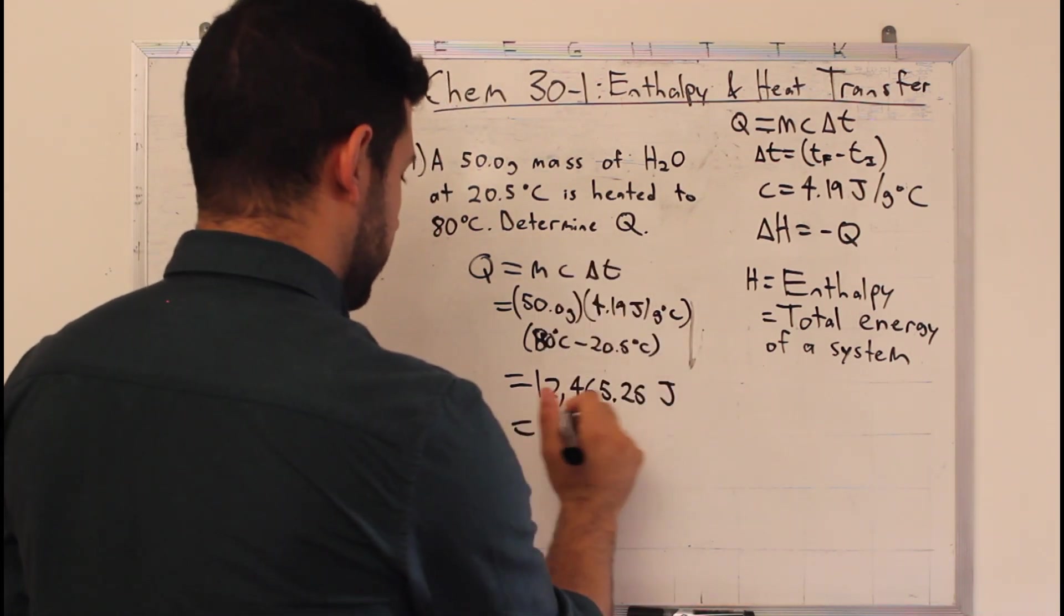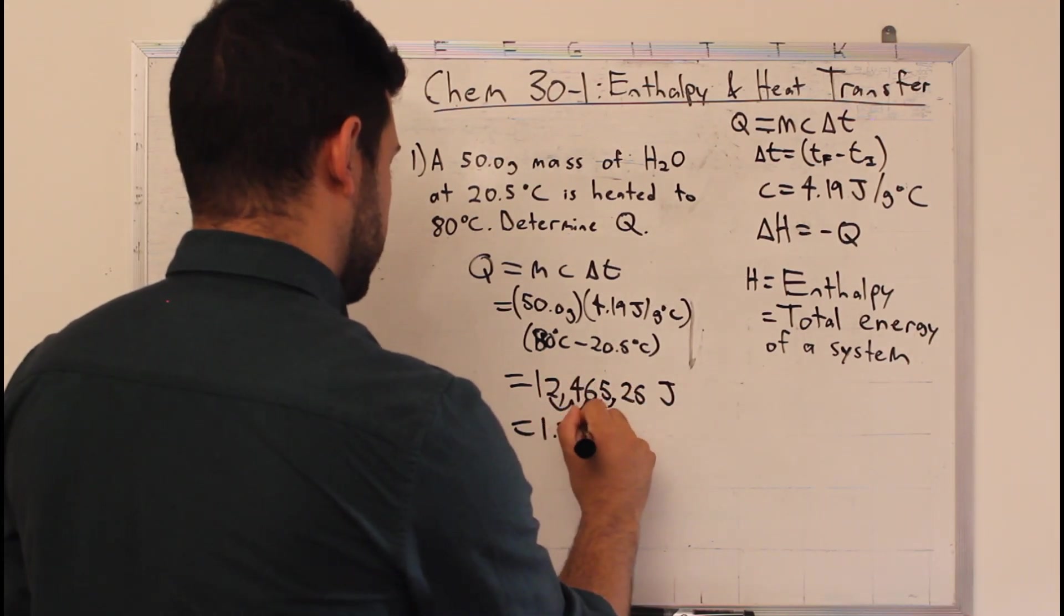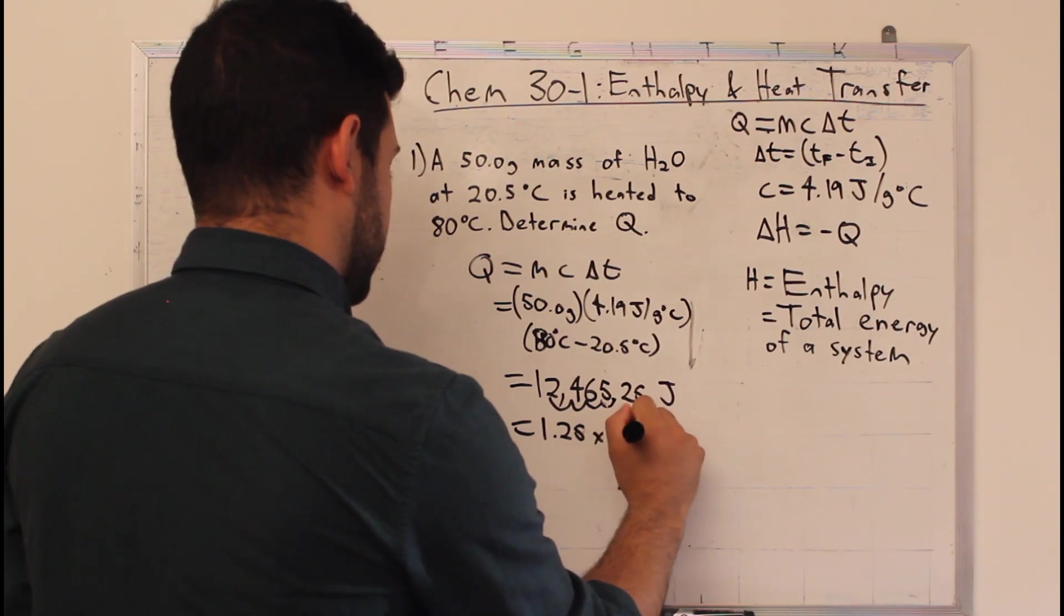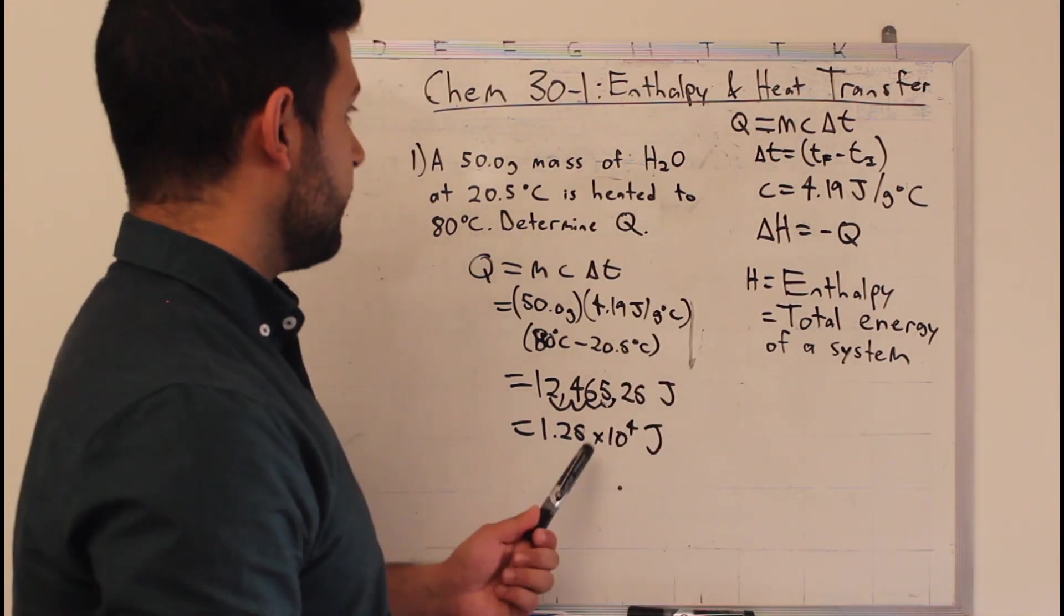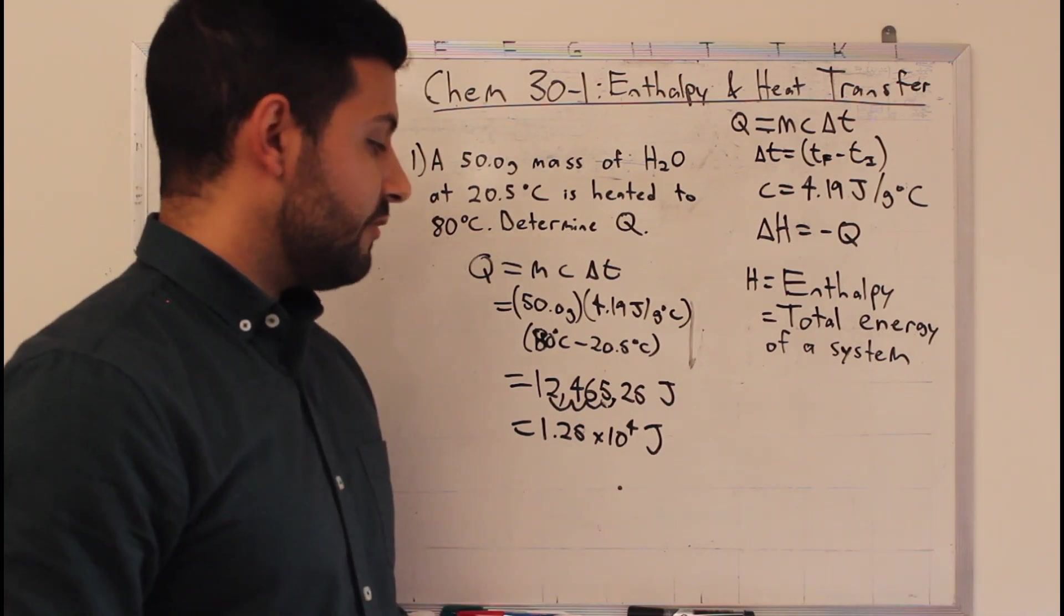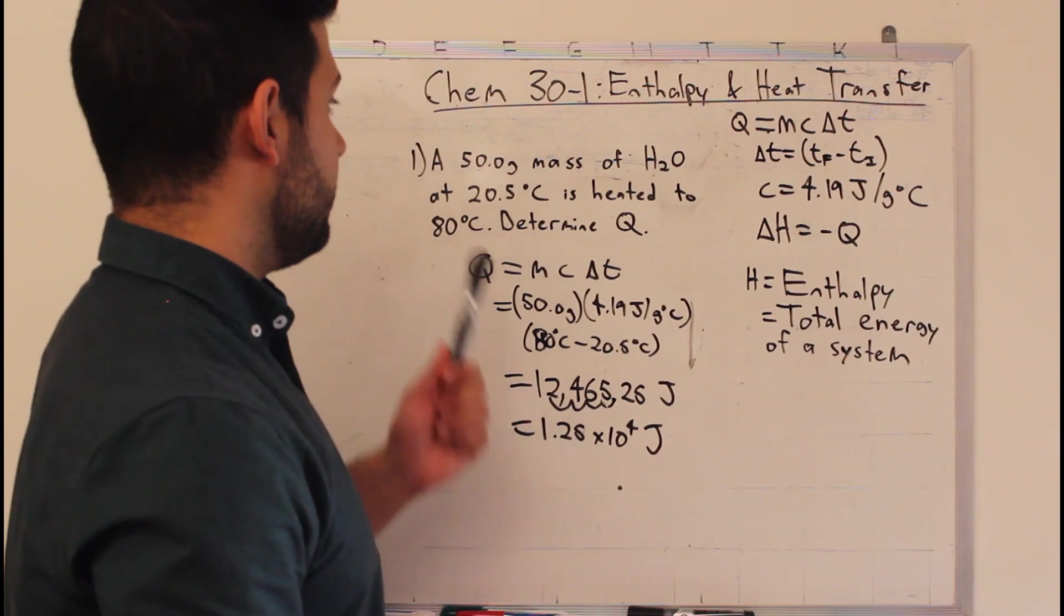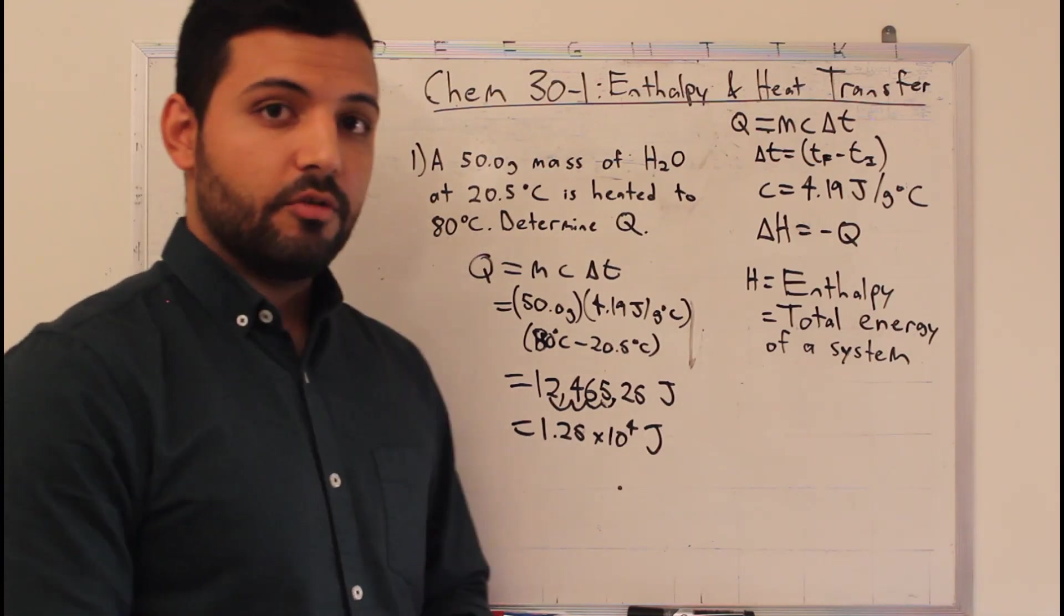To do sig digs, you just move the decimal over 1, 2, 3, 4 times: 1.25 times 10 to the 4 joules. So in English, this means it took 1.25 times 10 to the 4 joules to heat 50 grams of water from 20.5 degrees to 80 degrees Celsius.